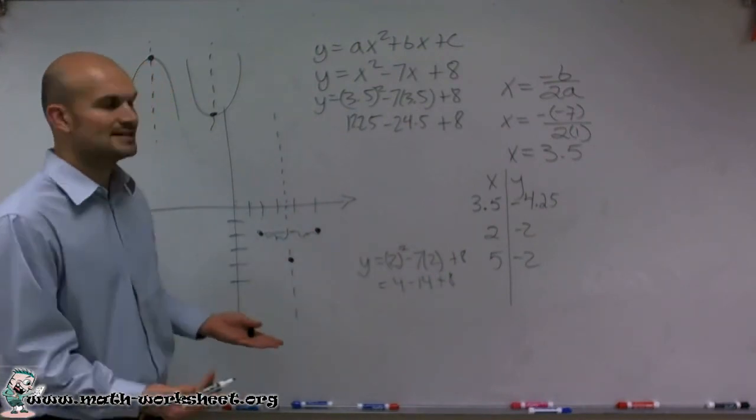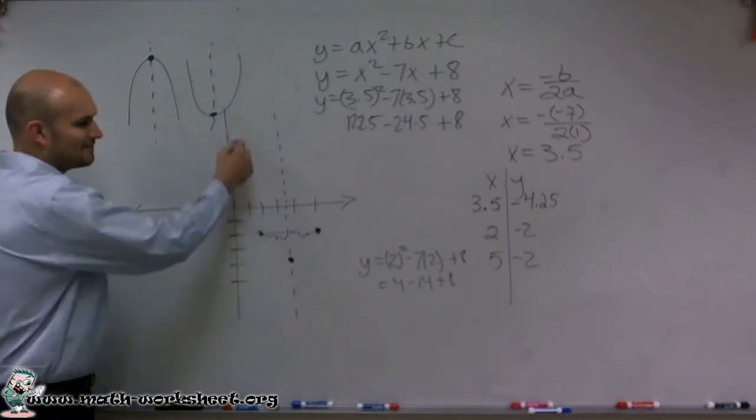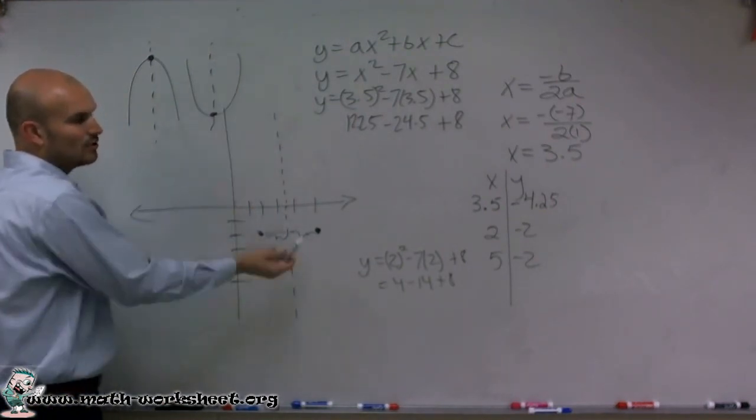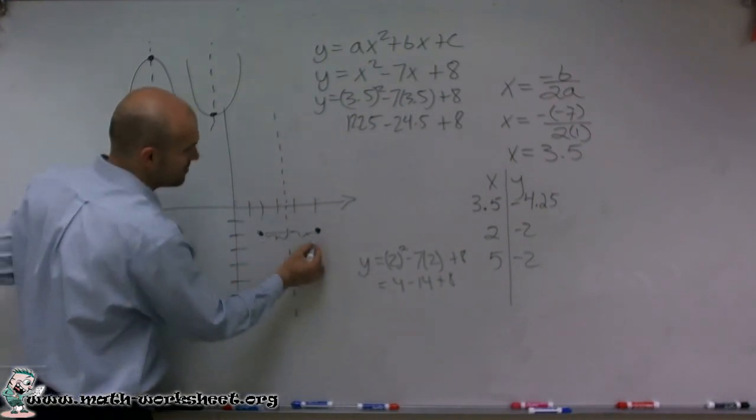Now I need to determine how this graph is going to look. It's a U-shaped graph. My graph is definitely going to continue going upwards. This vertex ends up being the low point of my graph.